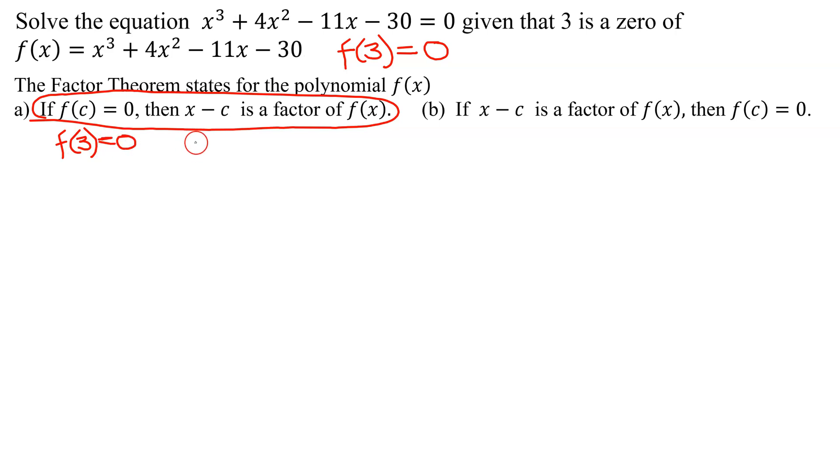Then I know one of my factors, and be careful—the signs here and here are opposite. Since this was f(3), this is going to be x - 3 is a factor of f(x).